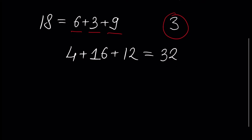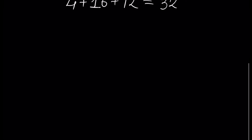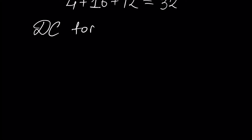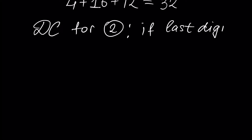Let's begin from the simplest case. Divisibility criteria for number 2: if the last digit is even or 0.